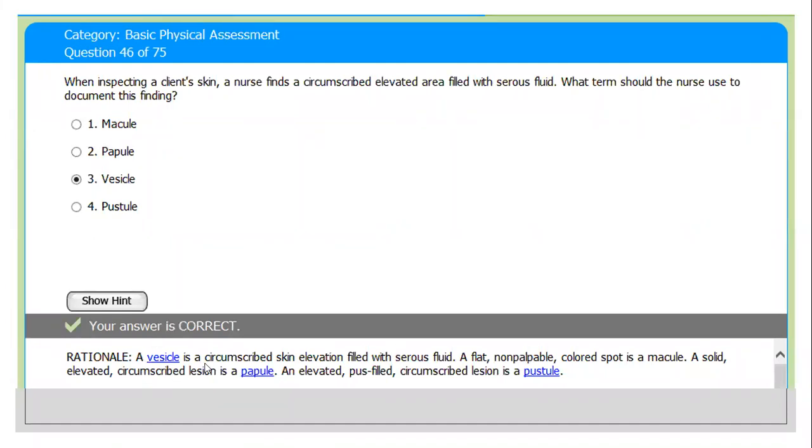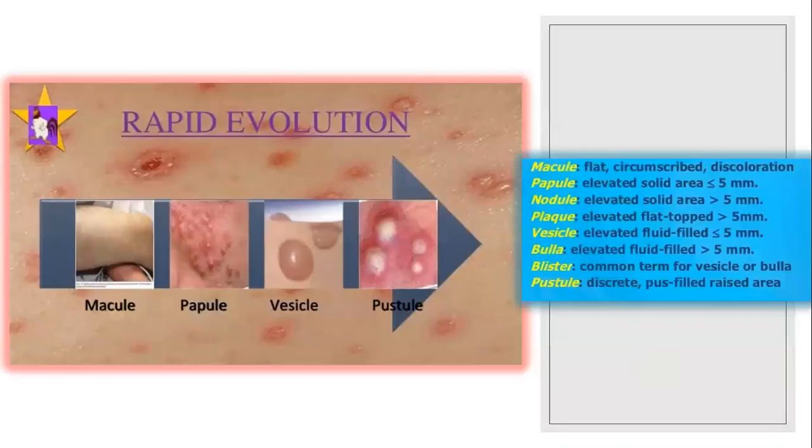The correct answer is vesicles. A vesicle is a circumscribed skin elevation filled with serous fluid. A flat, non-palpable, colored spot is called macules. A solid but elevated and circumscribed lesion is called papules. An elevated but pus-containing or pus-filled circumscribed lesion is called pustule.